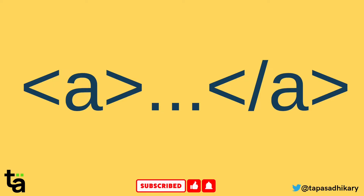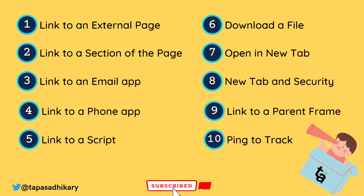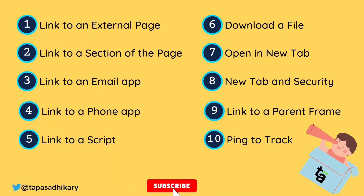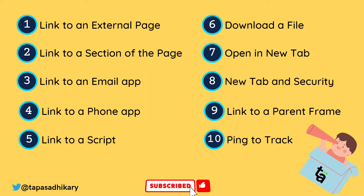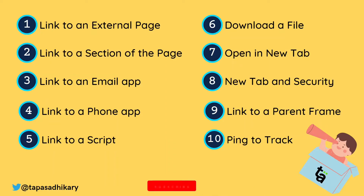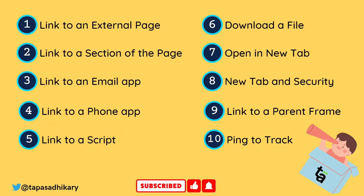So what are we going to cover? There are ten aspects we'll cover today. One is linking to an external page, then linking to a section of the page, then linking to an external app like an email app or phone app, or linking to a script. Then we'll cover downloading a file — literally downloading, not just opening in a new tab.